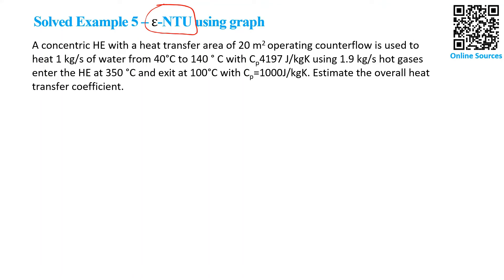Let's look into this problem. A concentric heat exchanger with a heat transfer area of 20 square meters operating counterflow is used to heat 1 kg per second of water from 40°C to 140°C. The water has a Cp of 4.179 kJ per kilogram Kelvin. The question is to estimate the overall heat transfer coefficient.